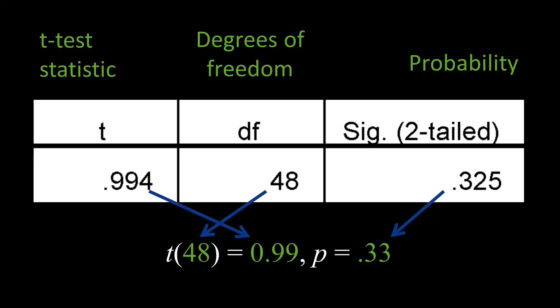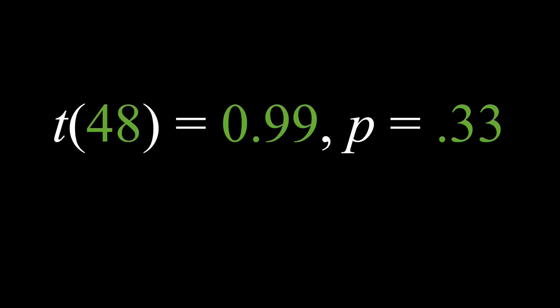Notice that the t and the p are lowercase and in italics. In this situation, there is a zero before the decimal in the t-statistic because a t-statistic may exceed 1.